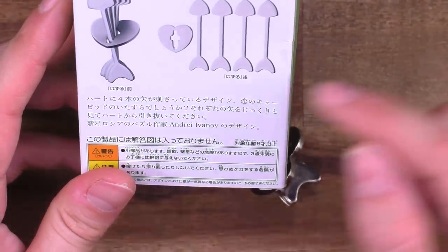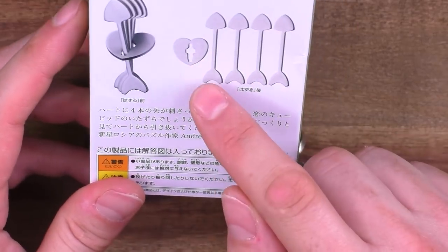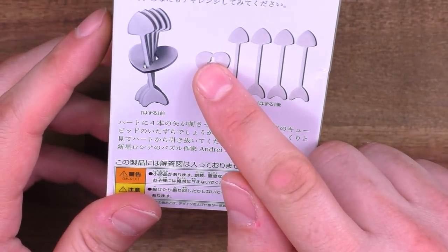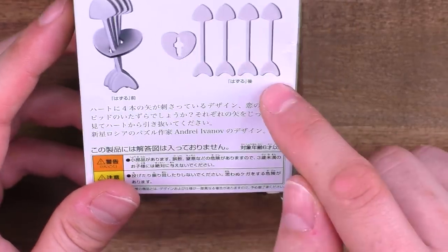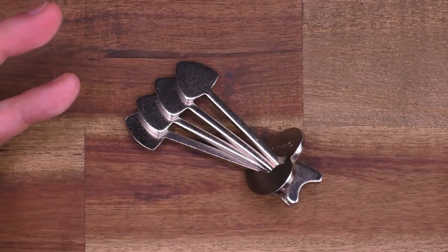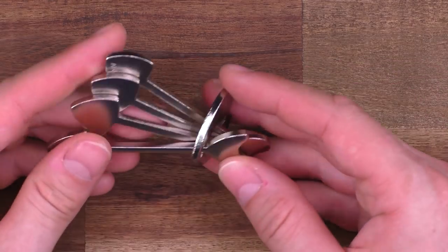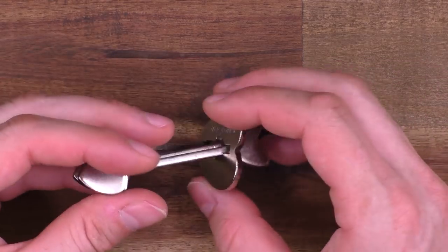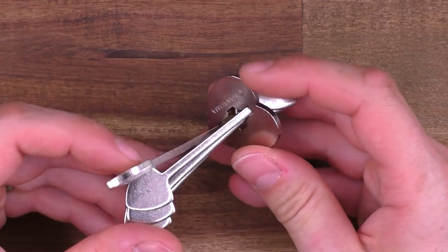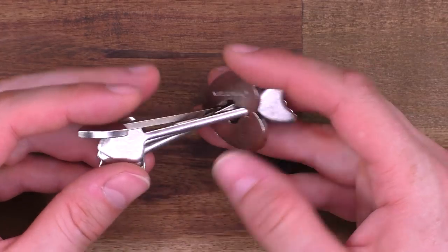It consists of 5 parts overall: one heart with something like a keyhole shape here, and 4 arrow pieces. It's not made out of cast metal this time, it's made out of sheet metal that is stamped into these arrow shapes and the Hanayama heart here, or the heart with the Hanayama sign.